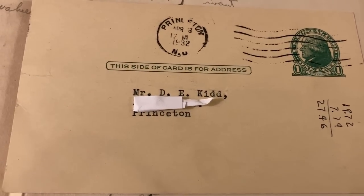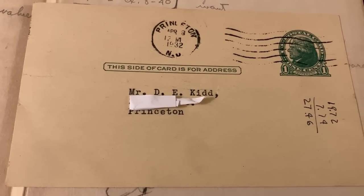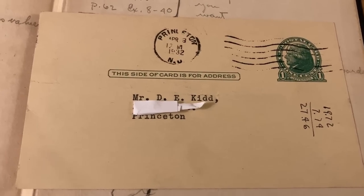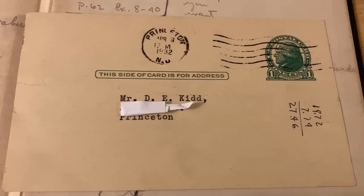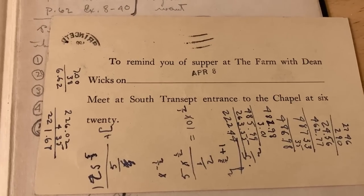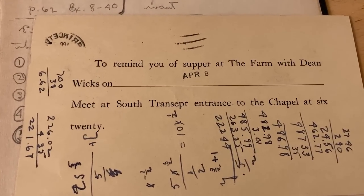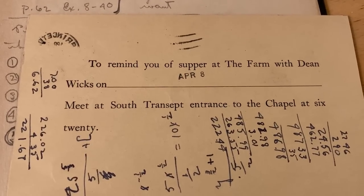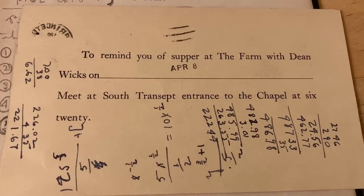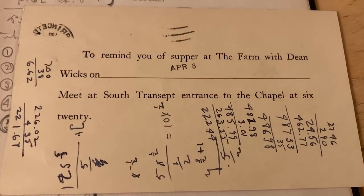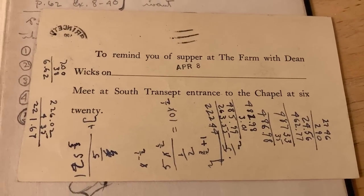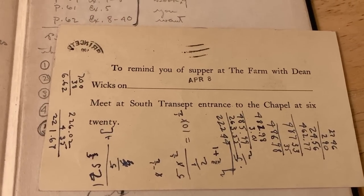It just showed a picture of some random duplex, but I don't want to include that in the video because I don't want people internet stalking whoever lives there now. The back is even more interesting. So this card says, to remind you of supper at the farm with Dean Wicks on April 8th, meet at South Transep entrance to the chapel at 6.20. Very interesting. It's really fun to see the kinds of things you find in these old books.